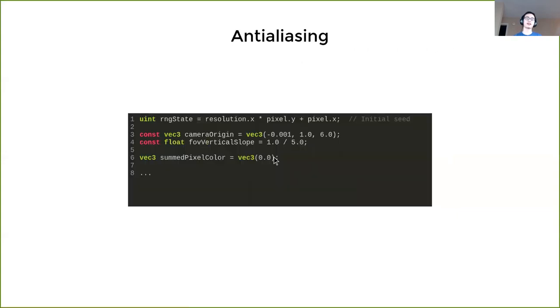The next step is actually doing anti-aliasing by generating a lot of samples per pixel. What we will do is similarly we will use the pixel coordinates as initial seed.